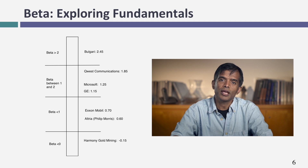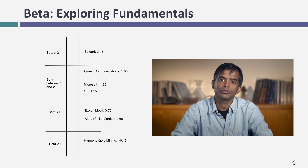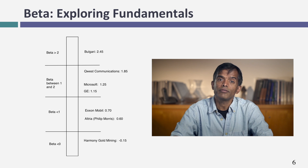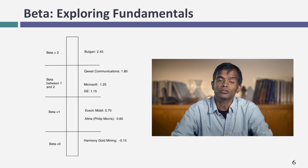The final example is Altria, or Philip Morris as you used to know it. Why does it have a low beta? Because its product or service is an addiction. If your product or service is an addiction, your revenues are going to be much more stable. If your revenues are more stable, your beta is going to reflect it.